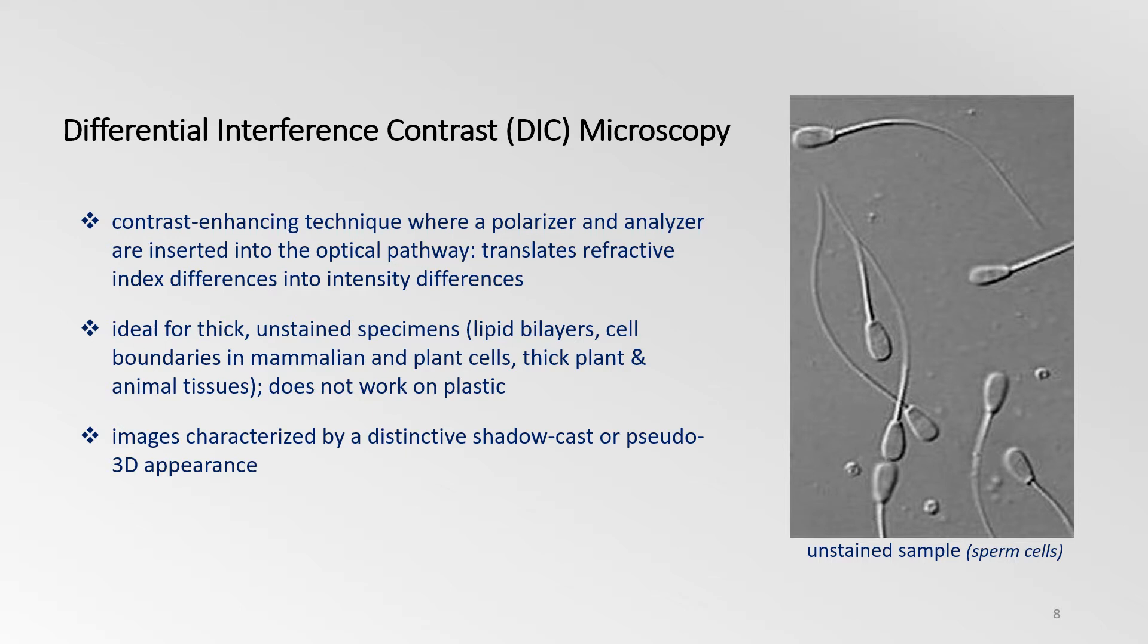Differential interference contrast, or DIC microscopy, is another brightfield method used to enhance the contrast of transmitted light images. It uses the polarization of light, translating refractive index differences into changes in intensity. This method is ideal for thick, unstained samples on glass slides or carriers that are not made of plastic. DIC images give the impression of topography and have a distinctive shadow cast or pseudo-3D appearance.